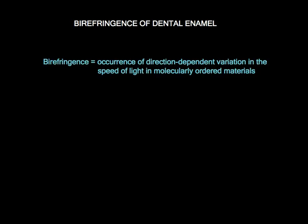Let's start with the definition of birefringence. It can be said that it is the occurrence of two or more light velocities in a molecularly ordered material depending on the direction of propagation. This can be represented using simple models of the chemical composition of materials.